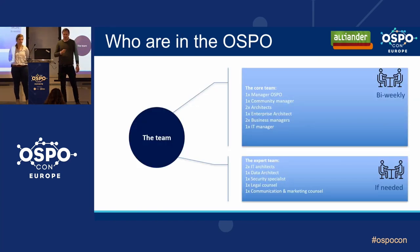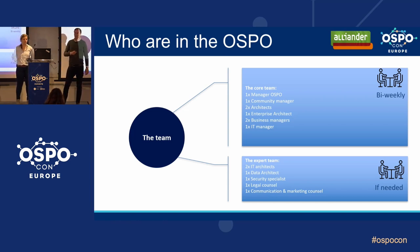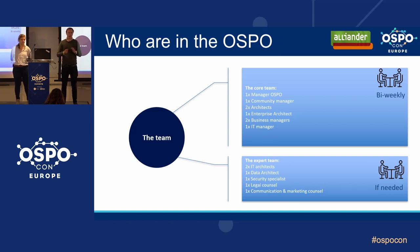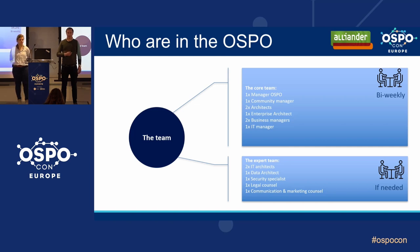To give you an idea of who is in our OSPO: our OSPO consists of two teams — the core team and the expert team. The core team is responsible for the day-to-day running of the OSPO and meets bi-weekly. It consists of an OSPO manager, a community manager, two architects, an enterprise architect, a business manager, and an IT manager.